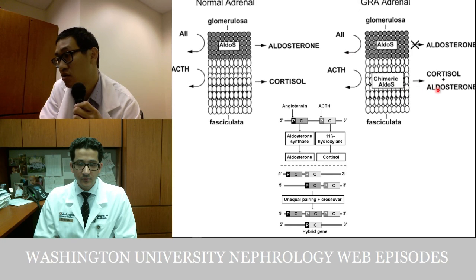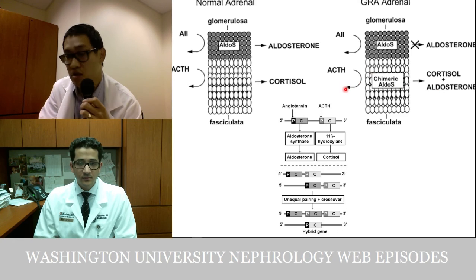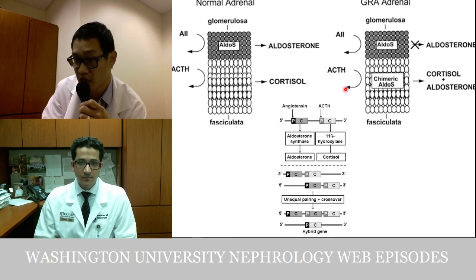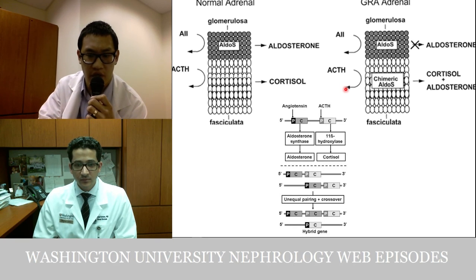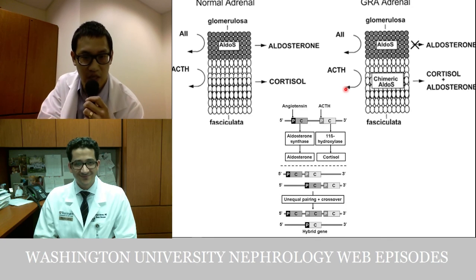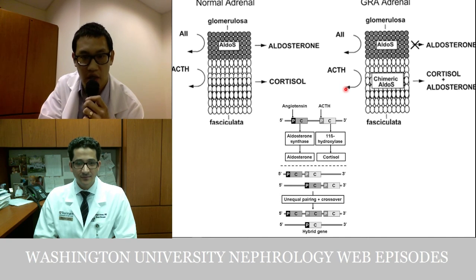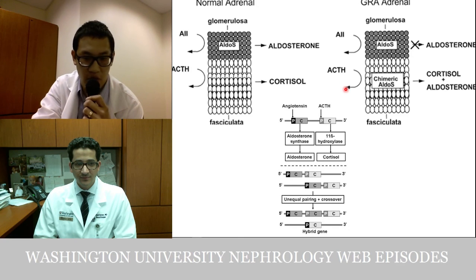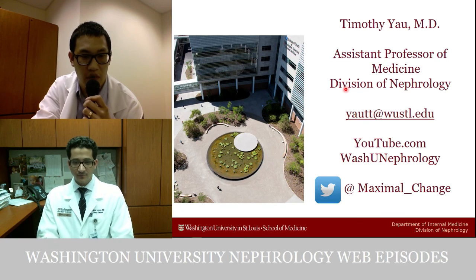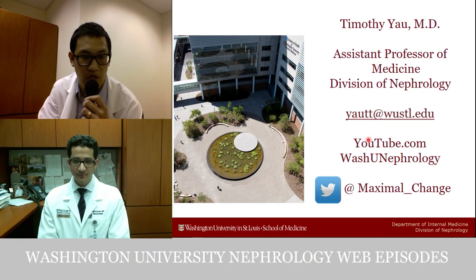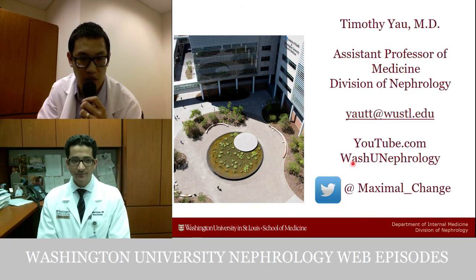The only way to decrease aldosterone synthesis in GRA is to shut down ACTH production by giving glucocorticoids such as dexamethasone — that's why it's called GRA. GRA is autosomal dominant. These four questions demonstrate the challenge of board exams: hypokalemia, metabolic alkalosis, and hypertension all seem similar, but each must be understood as an individual entity with targeted treatment. We'll be back with more board review next month. You can reach us at yautt@wustl.edu or find us on YouTube by searching Wash U Nephrology.